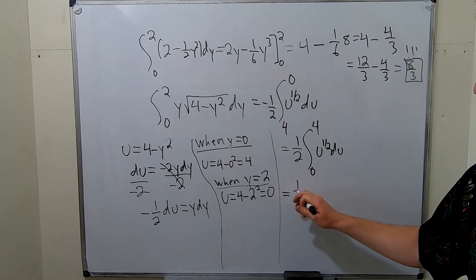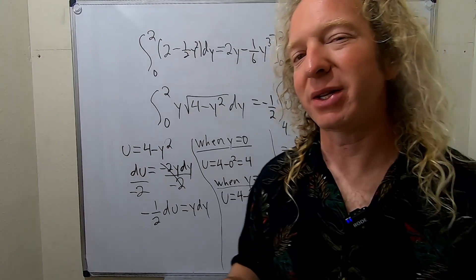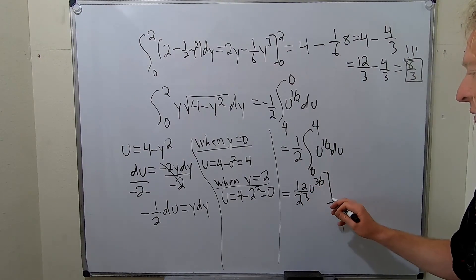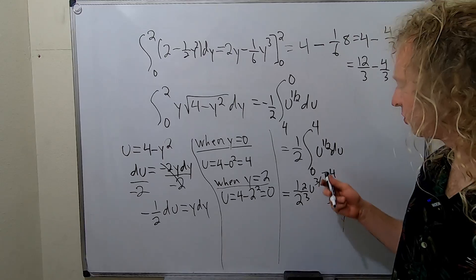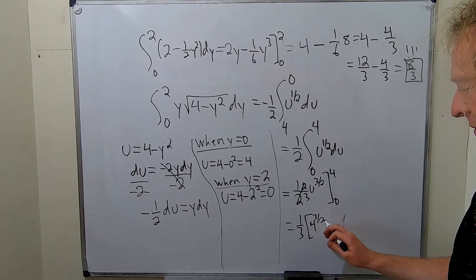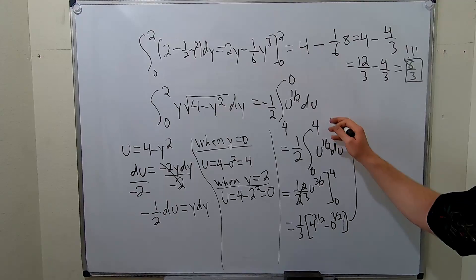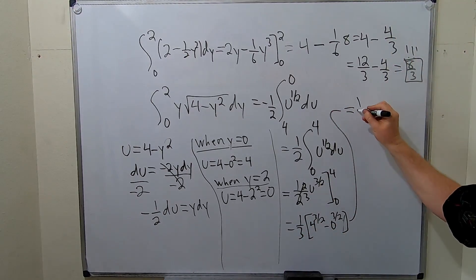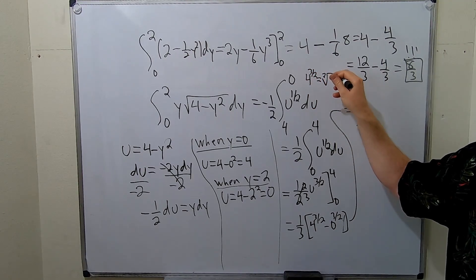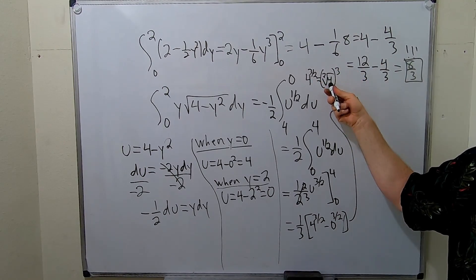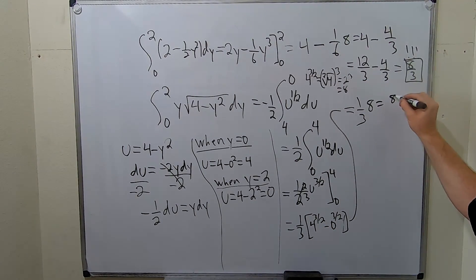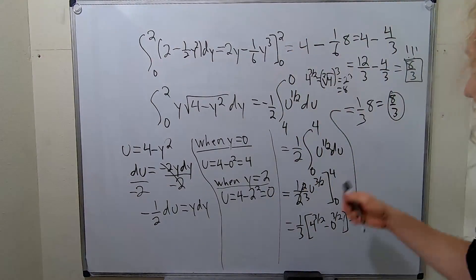Now we integrate: add 1 to the exponent to get three-halves, so we have u to the three-halves divided by three-halves — which is the same as multiplying by two-thirds — from 0 to 4. The one-half and two-thirds multiply to give one-third. Plug in 4: four to the three-halves is the square root of 4 cubed, which is 2 cubed, so that's 8. Plug in 0: that's 0. So the result is one-third times 8, which is 8 thirds.